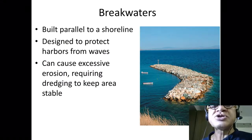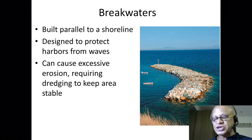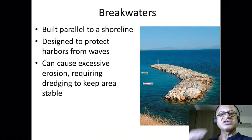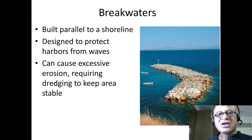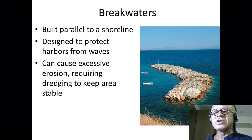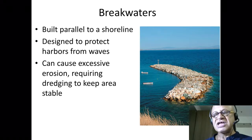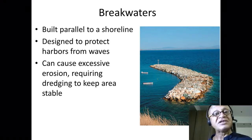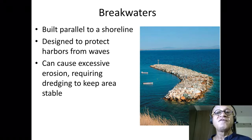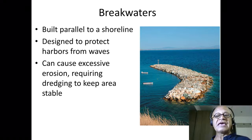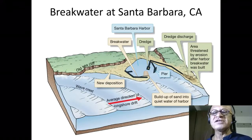The other kind of structure is a breakwater. Unlike a jetty, which is attached to the land, a breakwater creates a wave shadow by placing a barrier offshore, away from land. Wave energy is damped and a protected wave shadow is created where boats can park. Breakwaters are built parallel to the shoreline to protect harbors from wave energy, but they can cause excessive erosion and require dredging to keep the area stable.